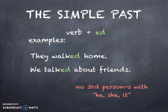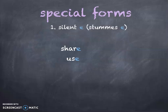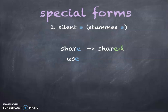However, there are some special forms. When you look at 'share' and 'use', you have a silent 'e' at the end. When you have a silent 'e' at the end, you only add 'd' and leave the silent 'e'. So 'share' becomes 'shared' — no silent 'e' shown, just 'ed' added. When you have 'use', no silent 'e', 'ed' added: it becomes 'used'.